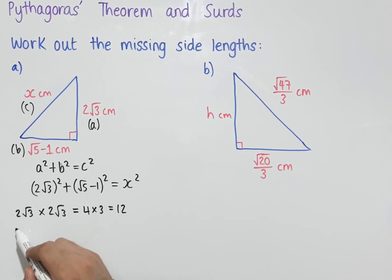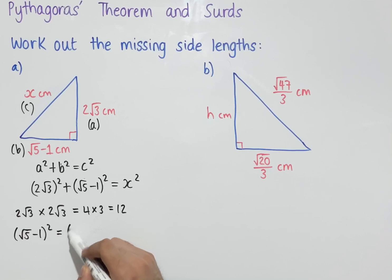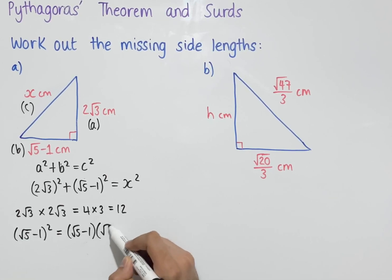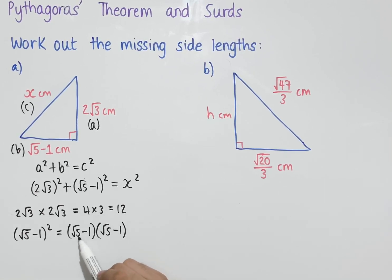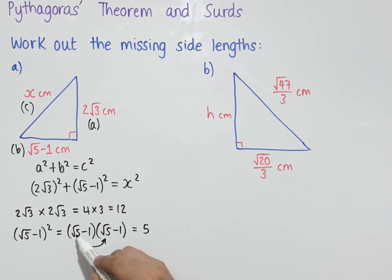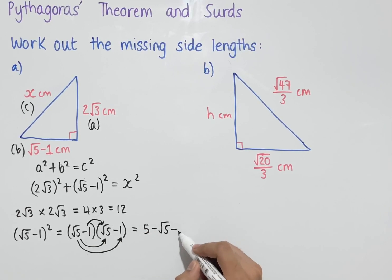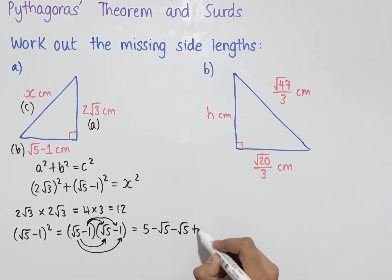Likewise, (√5 − 1)² is the same as (√5 − 1) × (√5 − 1). Expanding: √5 × √5 = 5, √5 × (−1) = −√5, (−1) × √5 = −√5, and (−1) × (−1) = +1.